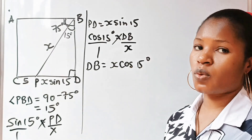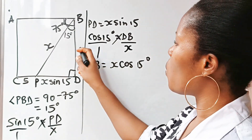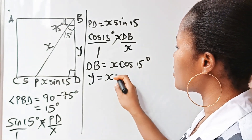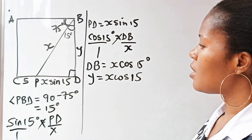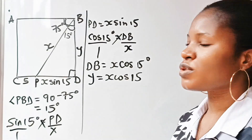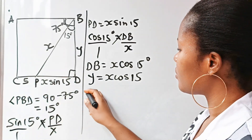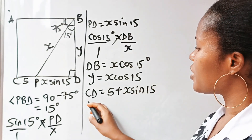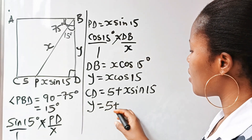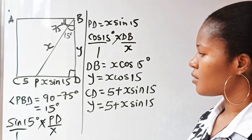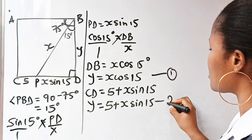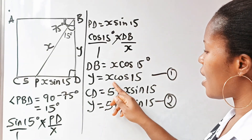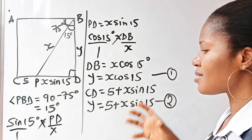Remember that this is a square. If we call DB equal to Y, then Y is equal to X·cos 15. And CD is also equal to Y, so we can say CD is 5 plus X·sine 15. Therefore Y is also equal to 5 plus X·sine 15. Since both equal Y, X·cos 15 is equal to 5 plus X·sine 15.